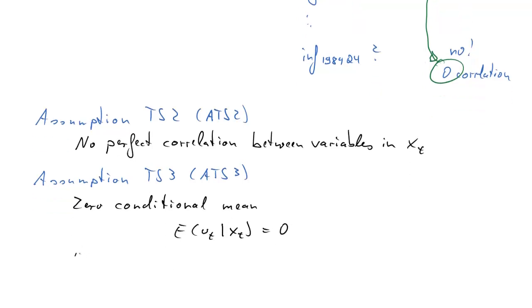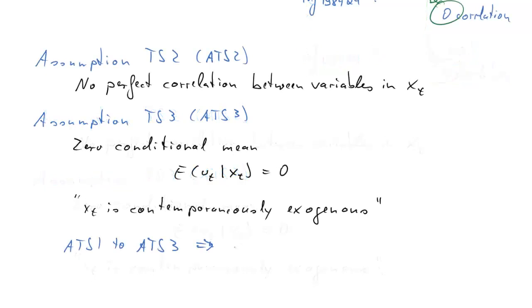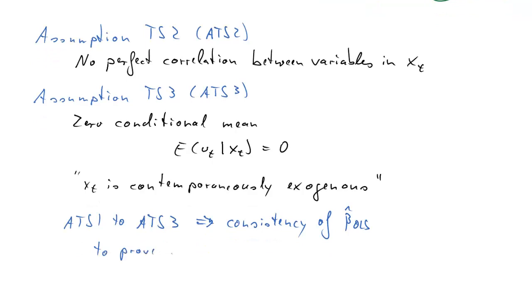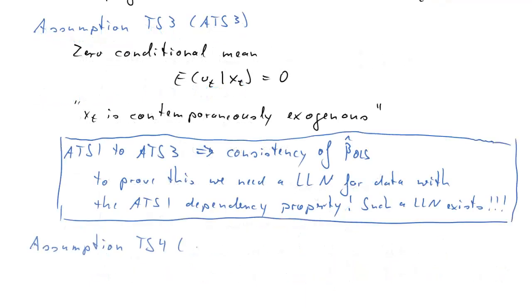This is very important. This is the zero conditional mean assumption. That's basically unchanged. We call, as before, a variable XT that meets this assumption, that this variable is contemporaneously exogenous. Now, if we have assumptions 1 to 3, this is sufficient to establish that your OLS parameter estimate, beta hat, is consistent. Now, to prove this, what we need is the law of large numbers. But we need it for data which have properties as described by time series assumption 1, especially the dependency property. And such a law of large numbers exists. Yay!